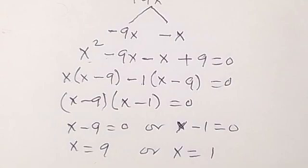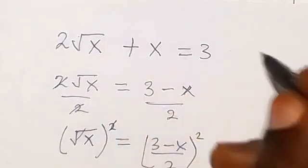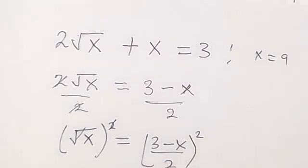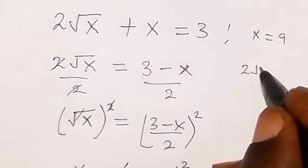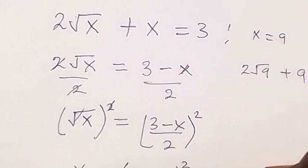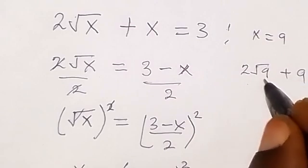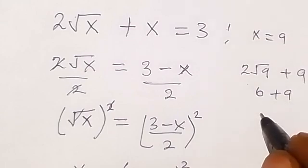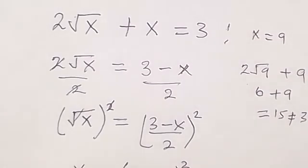These are the two values of x, but let's check which one satisfies the original equation. When x equals 9: 2√9 plus 9 — root 9 is 3, so 2 times 3 is 6, plus 9 gives us 15. And 15 is not equal to 3, so x equals 9 is not the solution.